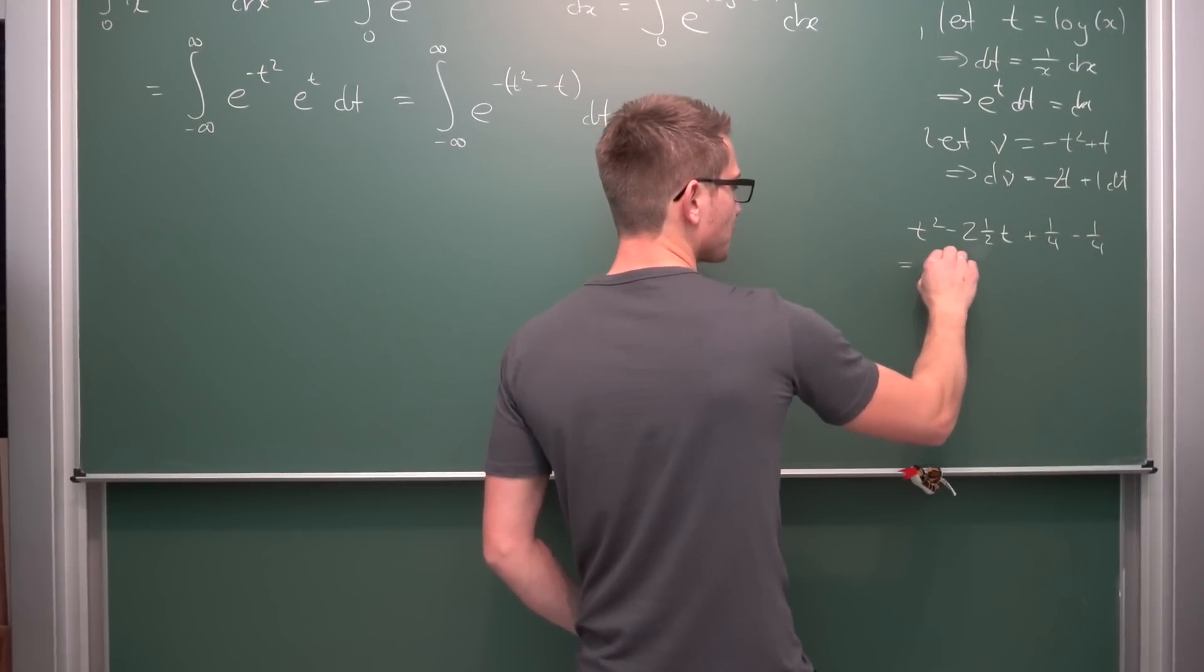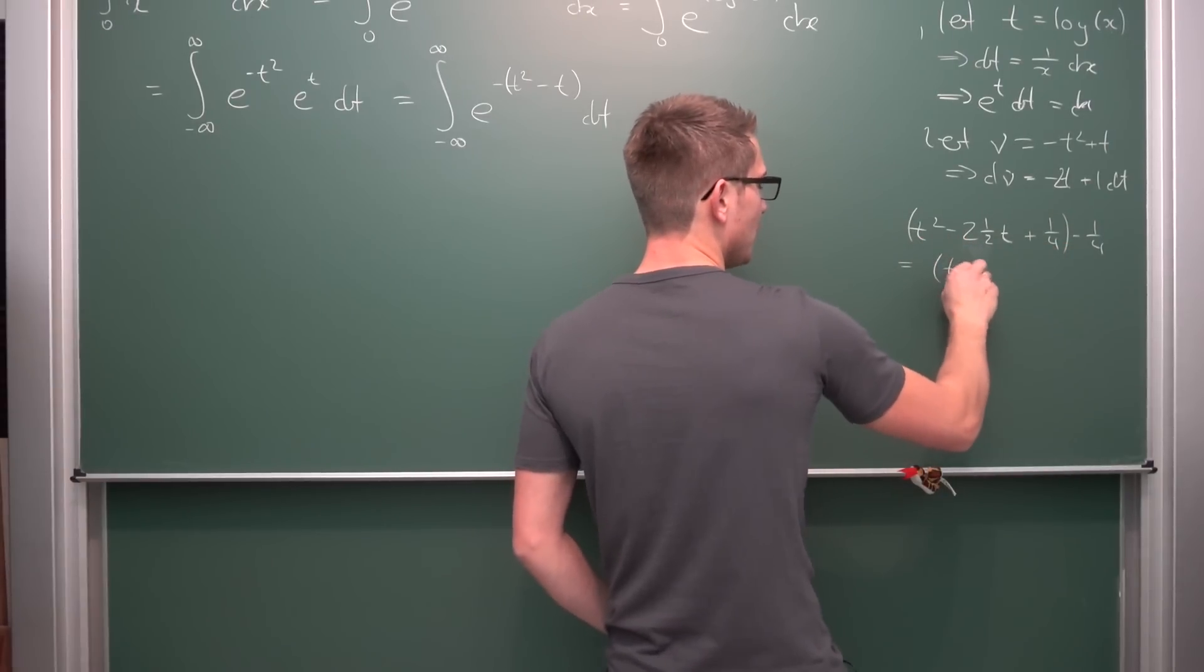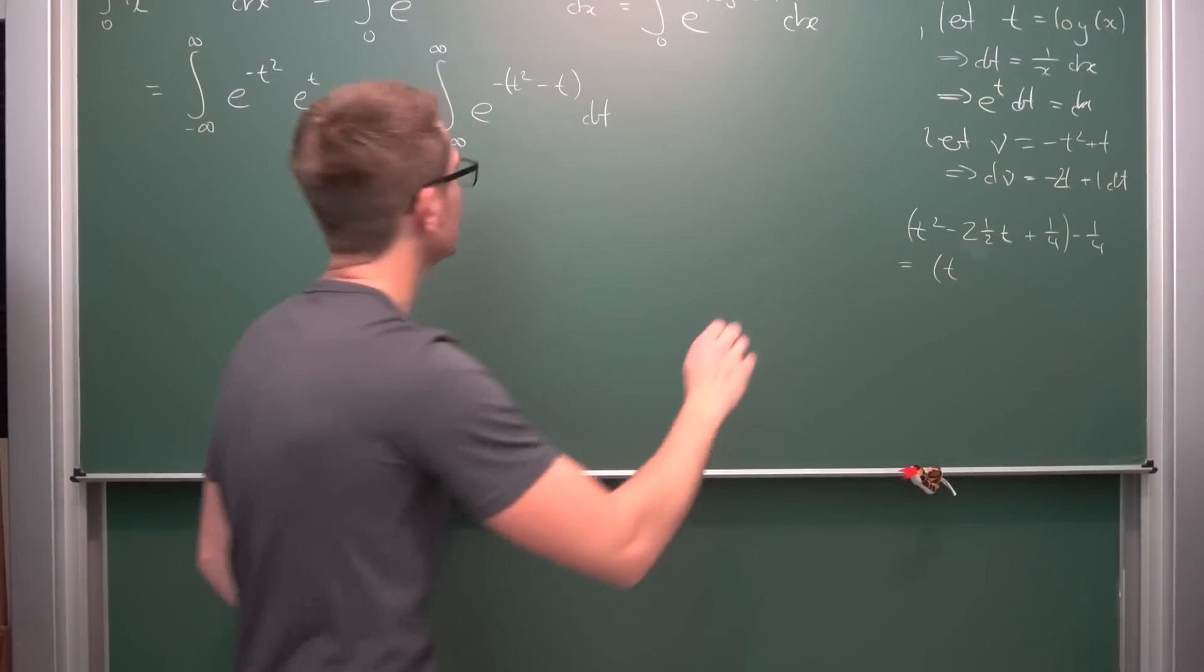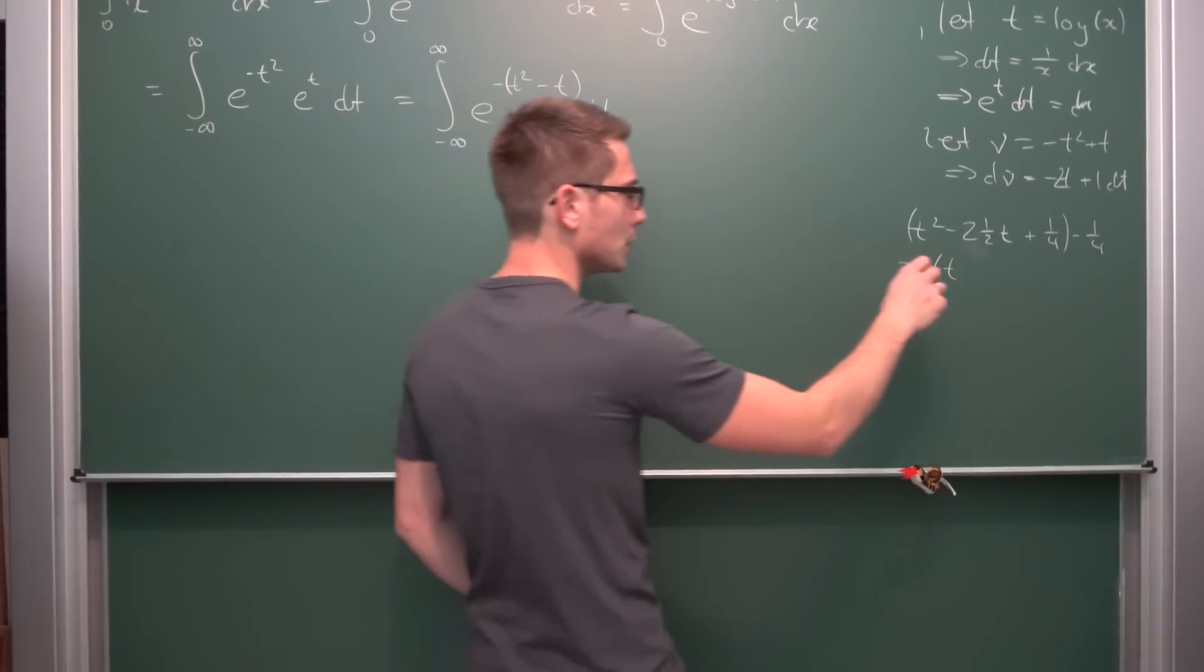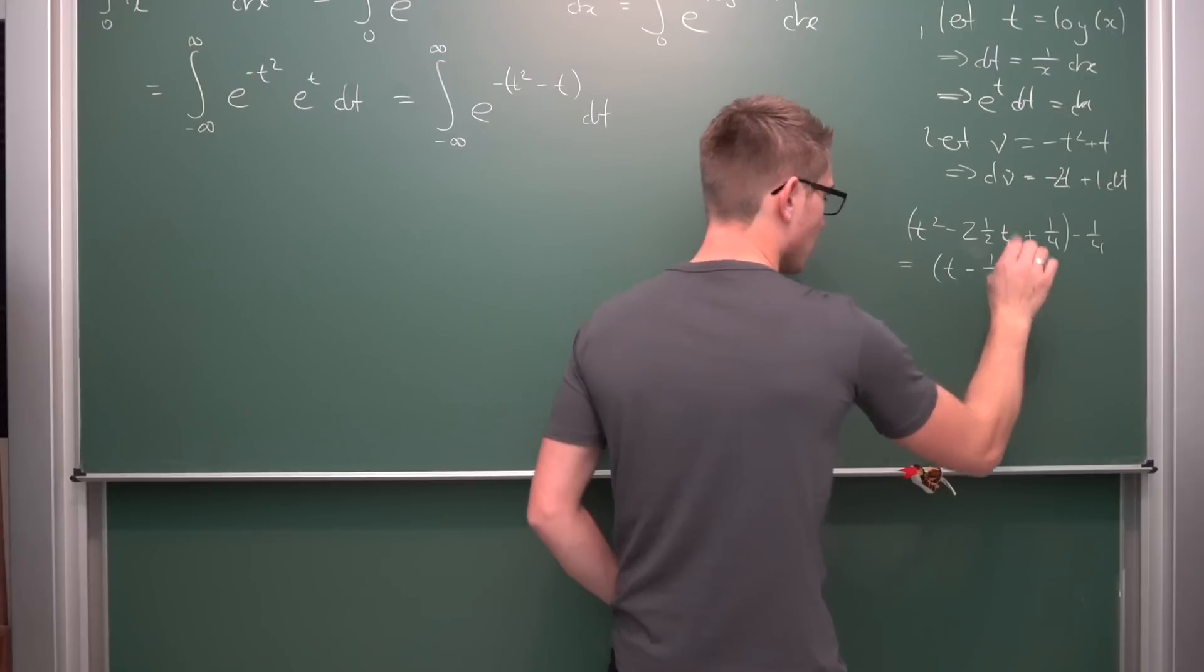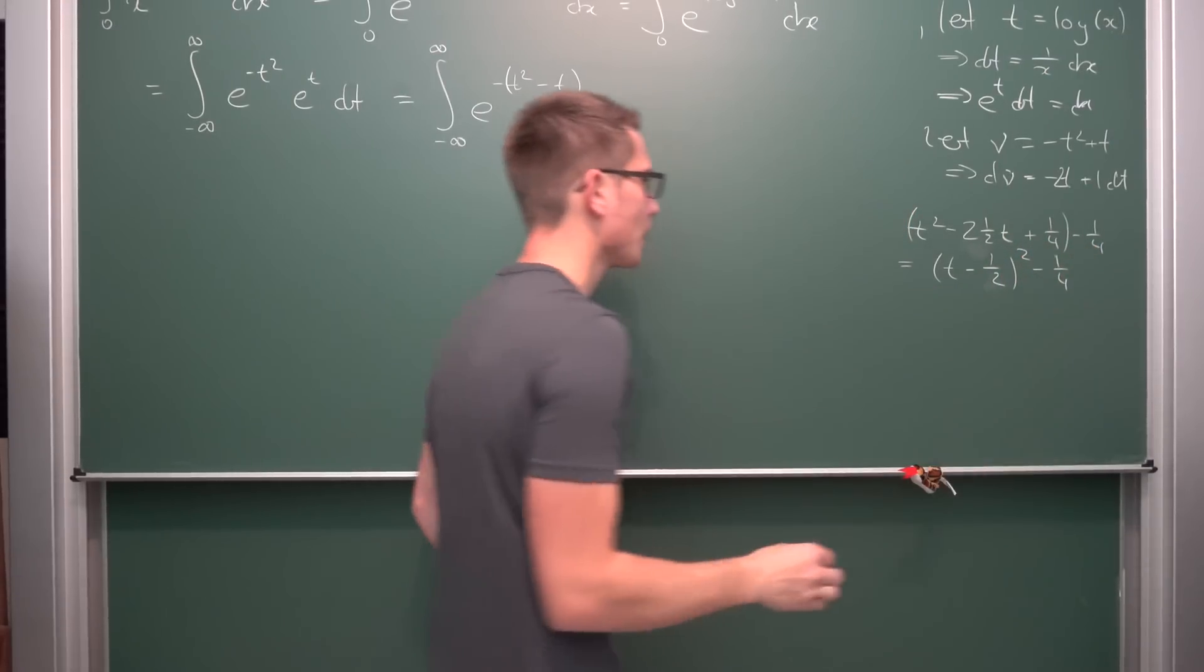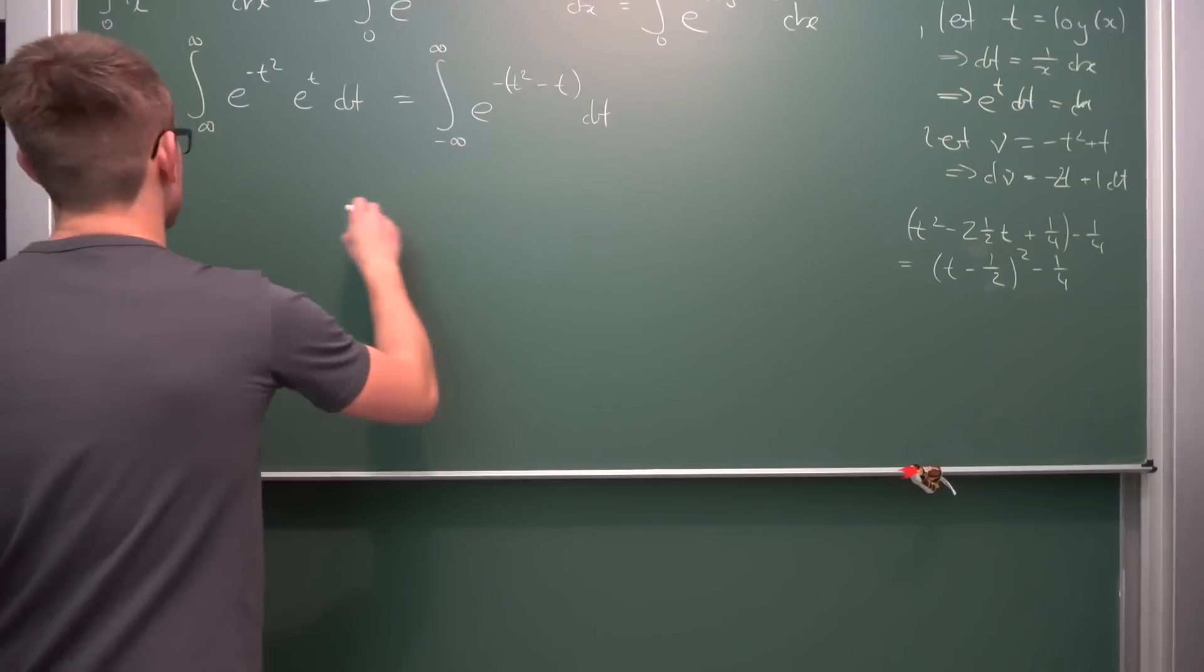Giving us overall, this part right here is going to result in the binomial theorem, namely (t minus 1 half) squared minus 1 quarter.